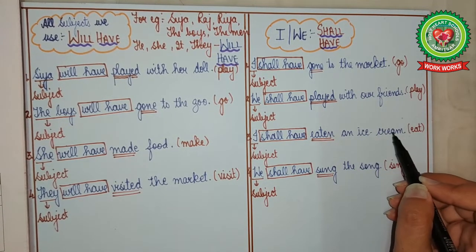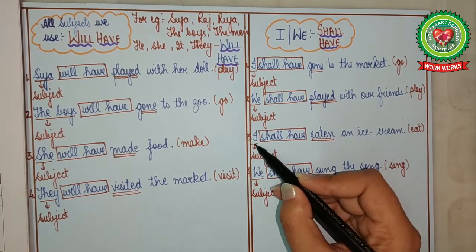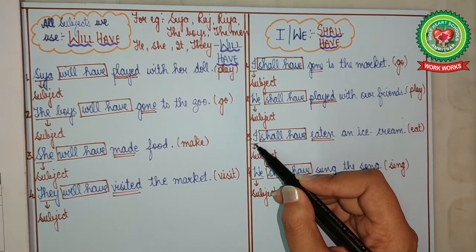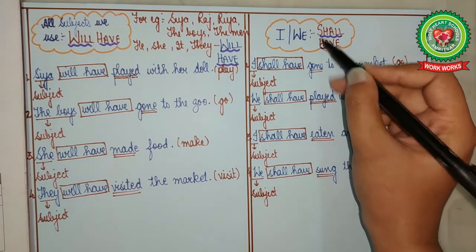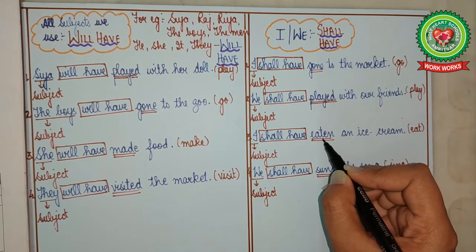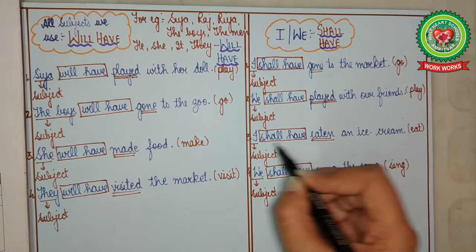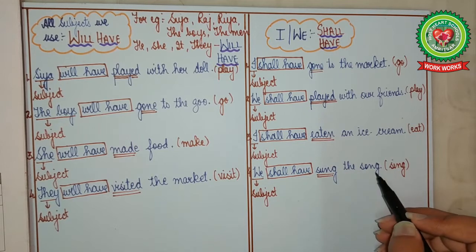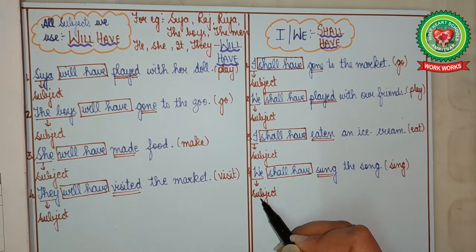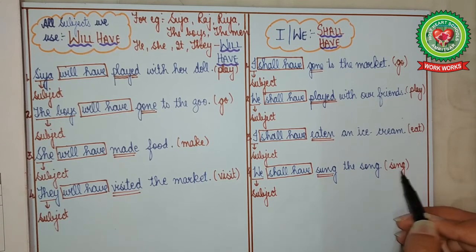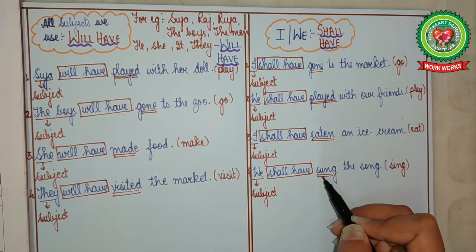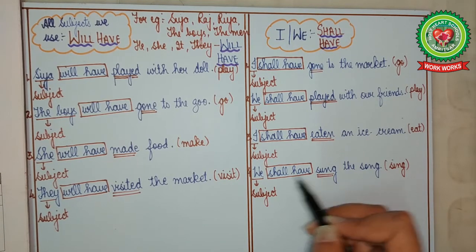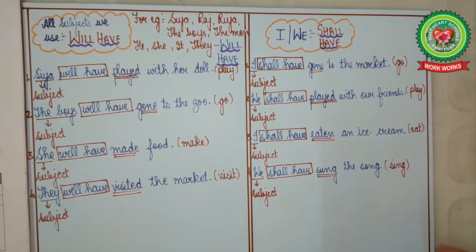More examples with 'shall have.' 'I' (verb: eat) — with I we always use shall have, eat changes to eaten, so: I shall have eaten an ice cream. 'We' (verb: sing) — with we we always use shall have, sing changes to sung, so: We shall have sung the song.